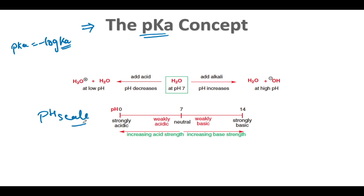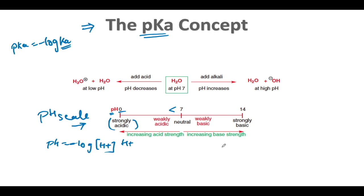Let's first talk about the pH scale. pH is the negative logarithm of H⁺ concentration. If there is a lot of acid, the pH value is going to be low. Under strongly acidic conditions with a lot of H⁺, pH is 0 or less than 7. If the concentration of H⁺ is low, the value is between 7 and 14 — greater than 7 — and at pH 14 it is strongly basic.